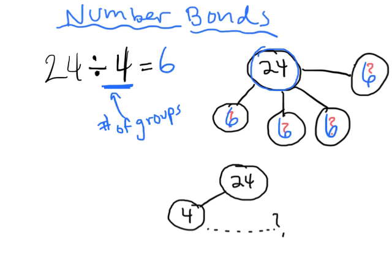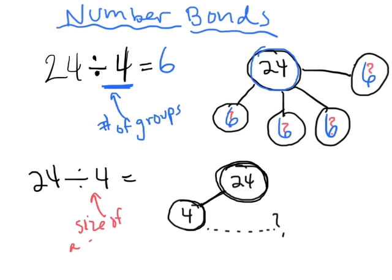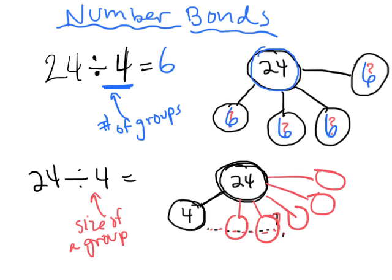Another way we could model this using a number bond is: we still have 24 as our total, but now for 24 divided by 4, the number 4 is the size of a group. The question is how many groups do we need until we've reached 24. It turns out we need six groups — 4, 4, 4, 4, 4, 4 — and that's how we get 24. So in this case, the 'divided by 4' is the size of each group.